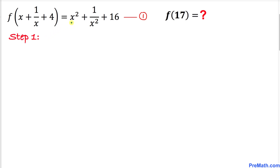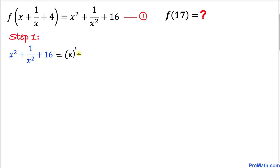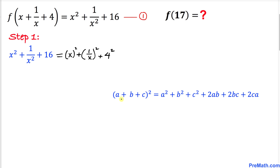Let's focus on the right-hand side of equation 1: x² + 1/x² + 16. We can write x² as x², 1/x² as 1/x², and 16 as 4². Now let's recall the well-known formula: (a + b + c)² = a² + b² + c² + 2ab + 2bc + 2ca. I want to isolate a² + b² + c² by moving the other terms to the left-hand side.